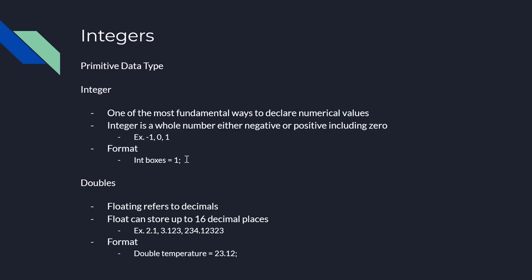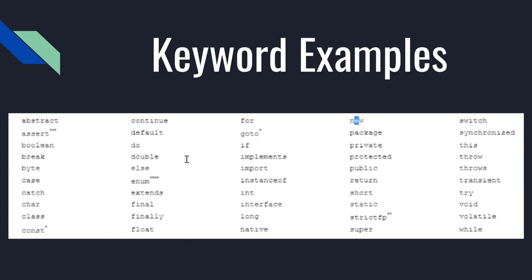Then we have a double, which is another way to declare numerical values and falls under the floating point category. Unlike an integer, you can have decimals here, and doubles can store up to 16 decimal places. For example, you could store 2.1 or 3.123 — this is useful for more precise calculations. The format would be something like: double temperature = 23.12. Also, make sure that when you name your data type it does not match reserved keywords, as those are built-in functions that make the program run specific tasks.